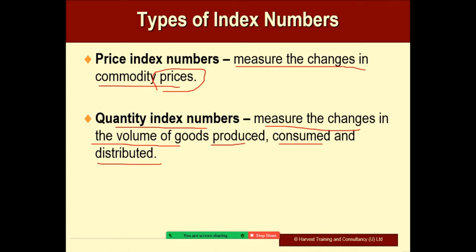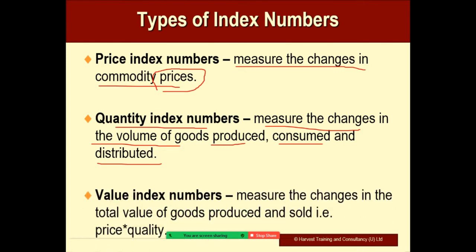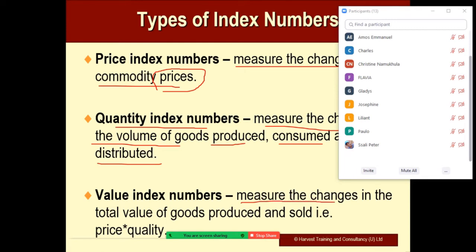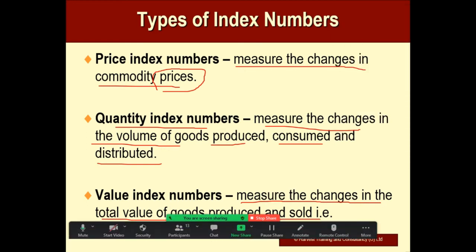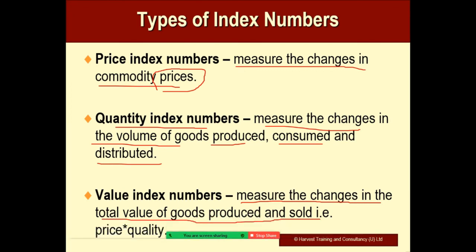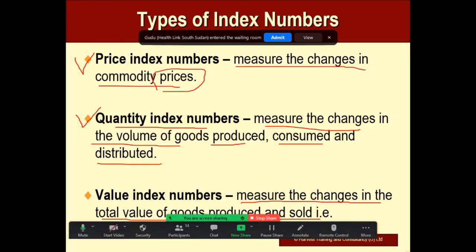Then we have the value index numbers, which measure the changes in the total value of goods produced and sold. To get the value index numbers, we multiply price by quantity. So those are our three different types: the price index numbers, the quantity index numbers, and the value index numbers.